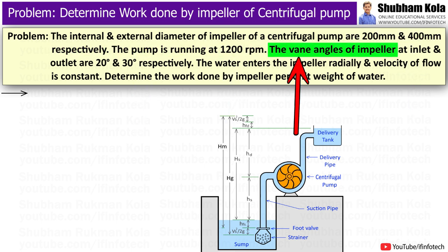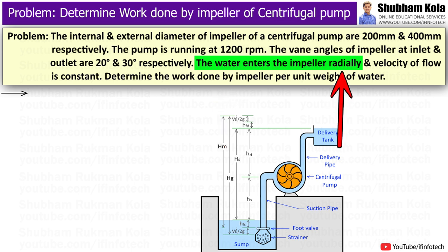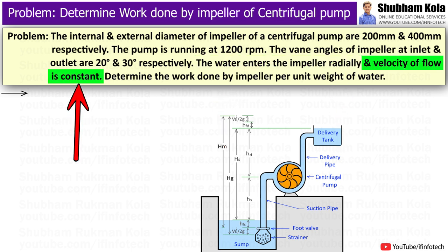The vane angles of impeller at inlet and outlet are 20 degree and 30 degree respectively. The water enters the impeller radially and velocity of flow is constant.